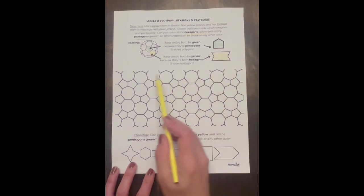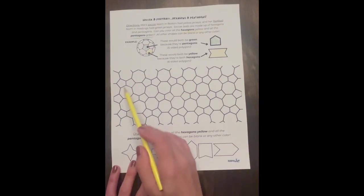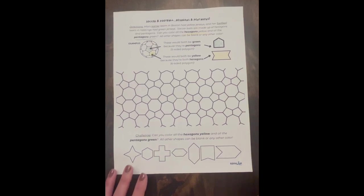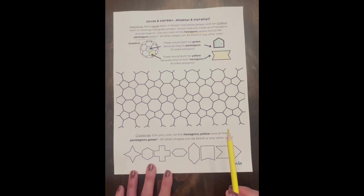So now here in this big pattern that's almost like a blown up version, blown up and flattened version of the soccer ball, we get to think about drawing in all of the six-sided shapes yellow and all of the pentagons, all of the five-sided shapes green.